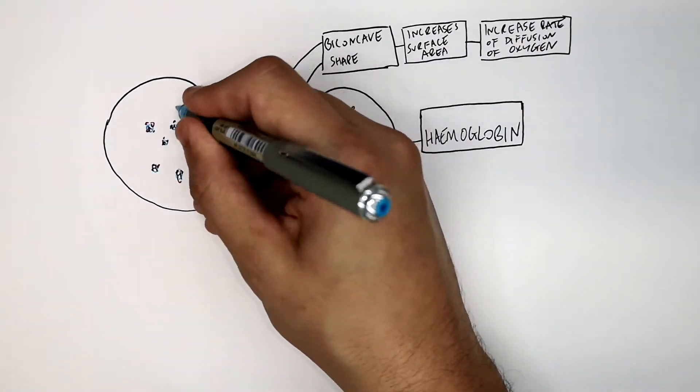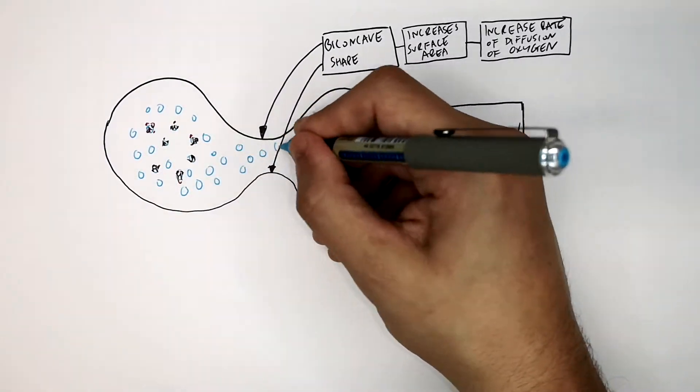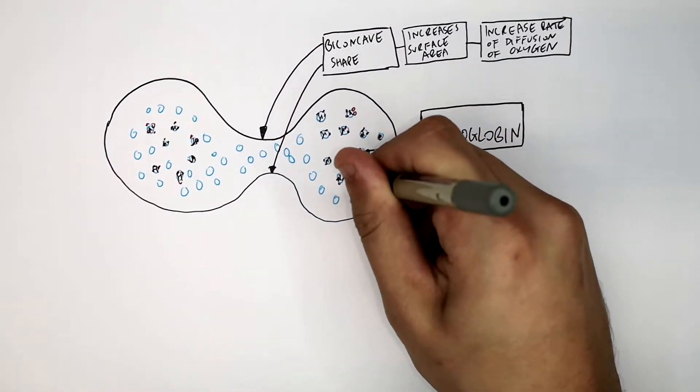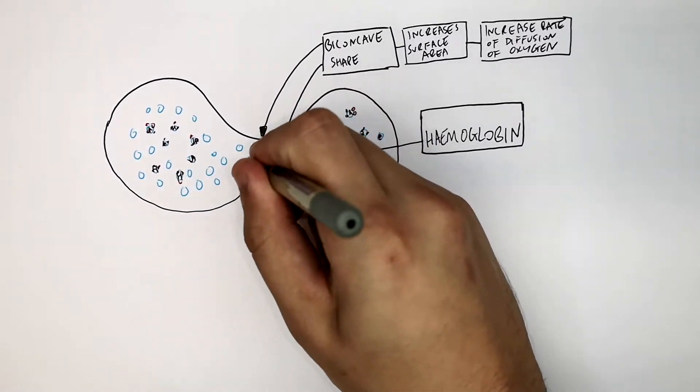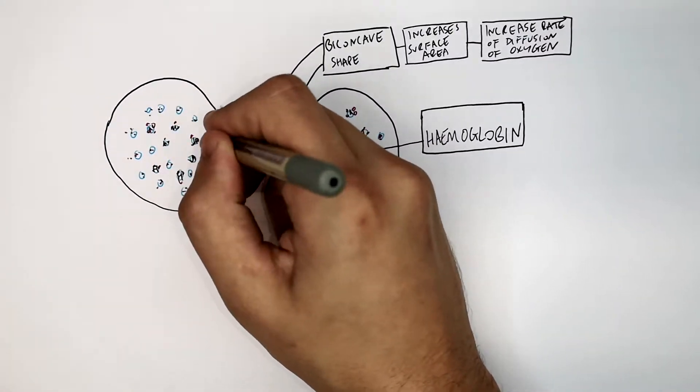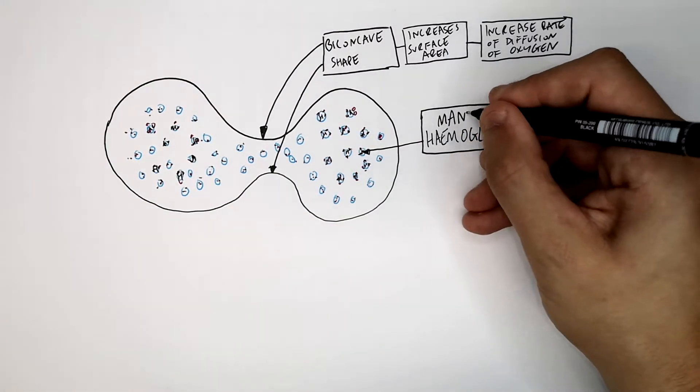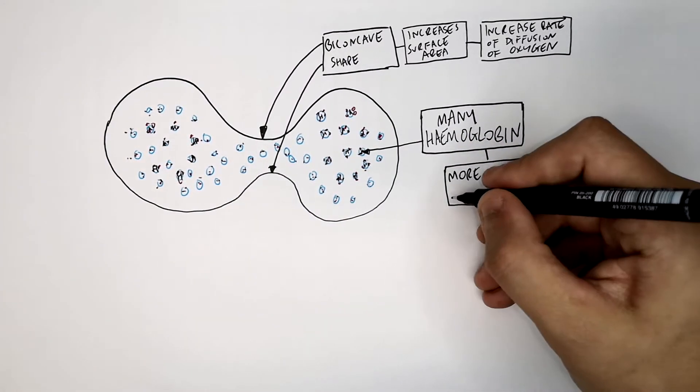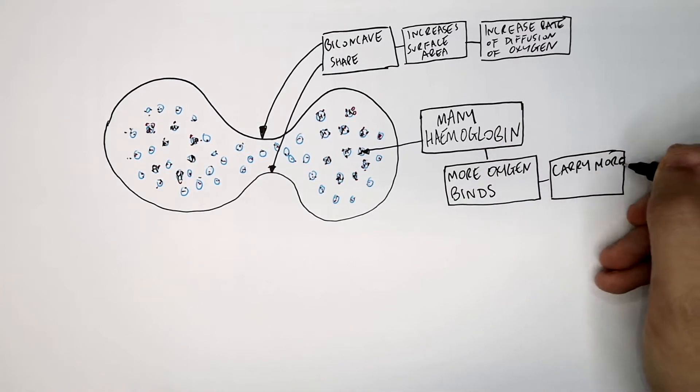But a red blood cell, aka erythrocyte, has lots of haemoglobin. The more haemoglobin, the more oxygen can bind the haemoglobin, and therefore it can carry more oxygen. So it's got many haemoglobin, so more oxygen binds, therefore it can carry more oxygen.